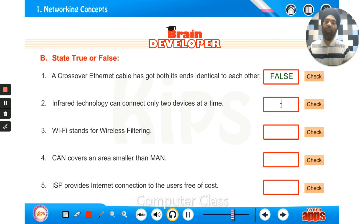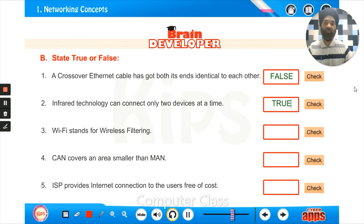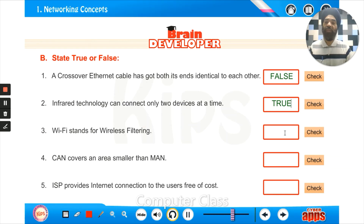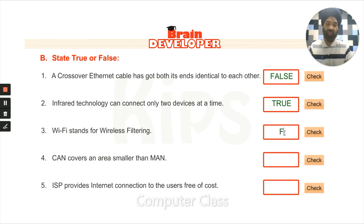Infrared technology can connect only two devices at a time — that is true. Wi-Fi stands for wireless filtering — no, it's wireless fidelity, so that is false.